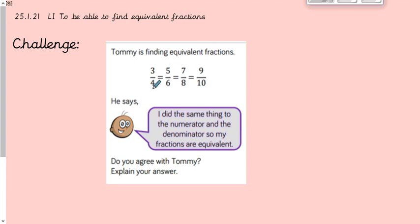Looking at the fractions, we need to find what he's done. To get from four to six he added two; six to eight he added two; eight to ten he added two — and he did the same with the numerators, adding two each time to both the numerator and denominator. But he is actually incorrect, because you can only times or divide fractions to make them equivalent — adding doesn't make them equivalent because it doesn't preserve the same value. Timesing or dividing preserves the value; adding does not.